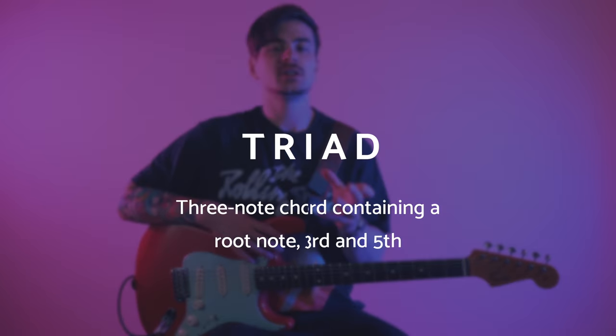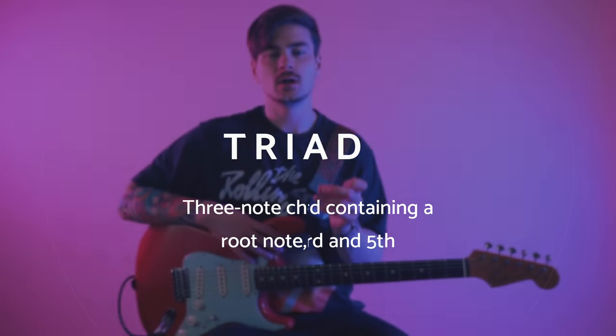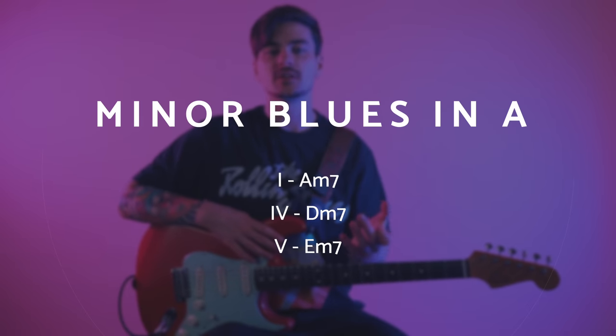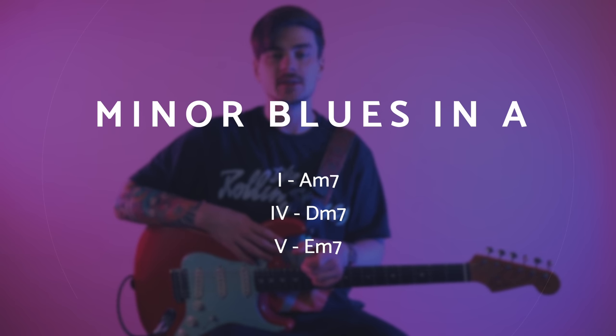So a triad is a three-note chord that contains a root, third, and fifth. I'll describe the type of chord progression we're working with today. This backing track is a minor blues in the key of A. The chords involved are all minor or minor seventh chords and there's only three of them: A minor seven, D minor seven, and E minor seven.